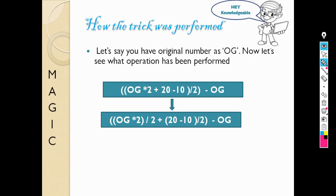That is OG times 2 divided by 2, plus 20 minus 10 divided by 2, minus OG. Let's see what it brings.